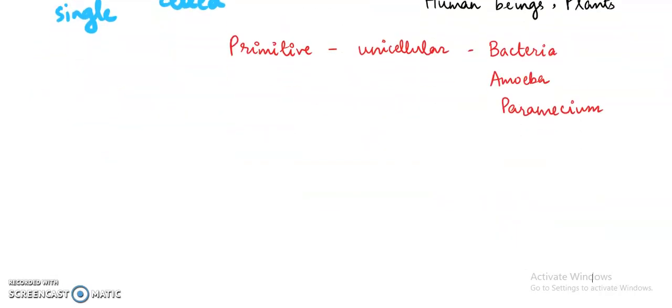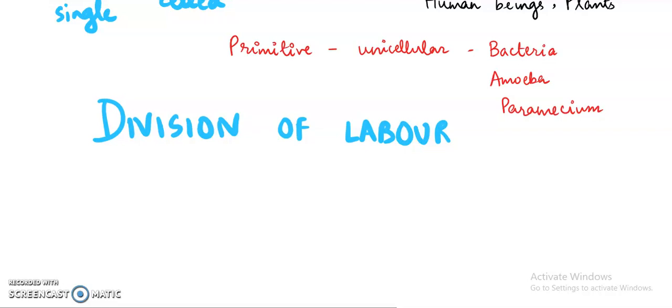Another thing that I should mention here is division of labor. Division of labor refers to the division of work. We have many cells in our body and there are some cells which are similar in structure and function, so they group together to form the tissue as I talked about in the previous video. So we have division of labor, which is very much present in the multicellular organisms.